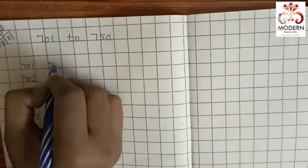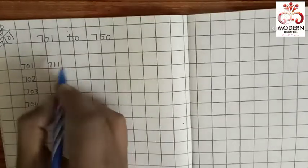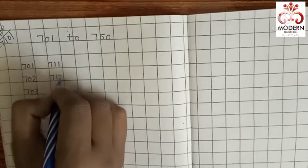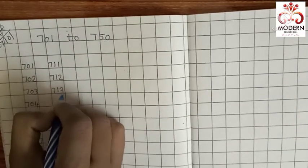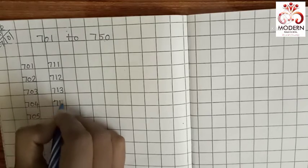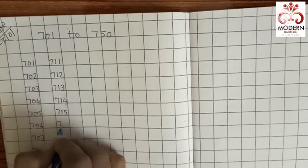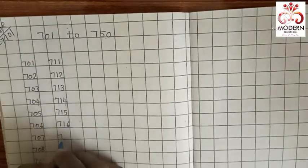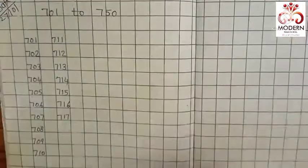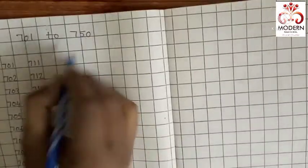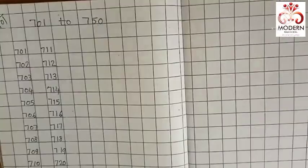711. Next row: 712, 713, 714, 715, 716, 717, 718, 719, 720.